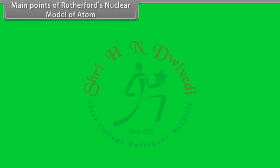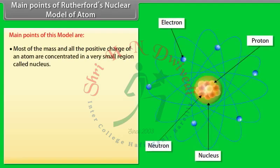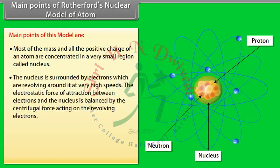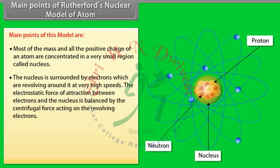Main points of Rutherford's nuclear model: 1. Most of the mass and all the positive charge of an atom are concentrated in a very small region called the nucleus. 2. The nucleus is surrounded by electrons revolving around it at very high speeds. The electrostatic force of attraction between the electrons and the nucleus is balanced by the centrifugal force acting on the revolving electrons.